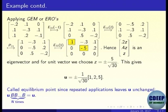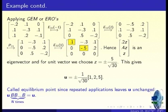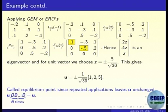Any multiple of an eigenvector is an eigenvector. Here the question asks for a unit eigenvector, so we take the eigenvector such that the sum of squares equals 1. That gives a vector which is a multiple of (0.2, 0.4, 1). This solves that problem, and u is called the equilibrium point, because repeated application of B leaves it unchanged: uB = u, uBB = u, etcetera.